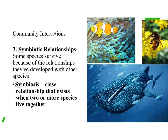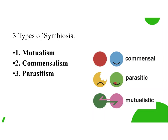Our third type of community interaction is a symbiotic relationship. Some species end up surviving because of the close relationships they form with other species nearby. In your notes, put down the definition of symbiosis: symbiosis is a close relationship that exists when two or more species live together. That doesn't necessarily mean it's a positive relationship — some are beneficial, some are neutral, and some are more harmful.